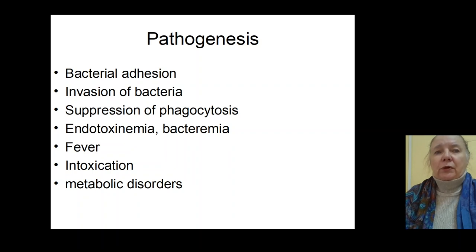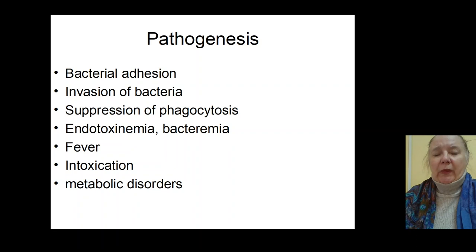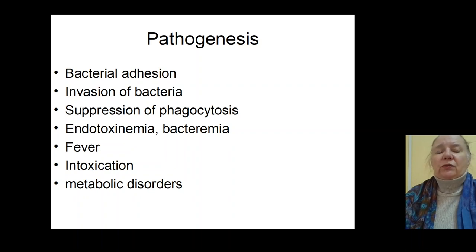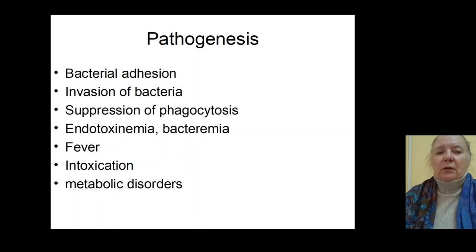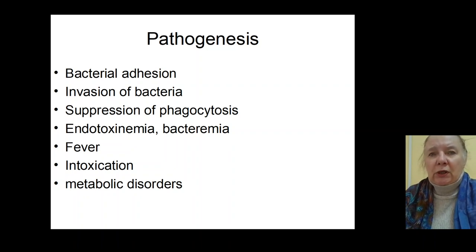Some bacteria have invasion abilities, aggressive abilities, and produce exotoxins which cause depression of phagocytosis and depression of immune response. This leads to fever and intoxication, disturbances of microcirculation, metabolic disorders, and polyorgan insufficiency. This is the pathogenesis of toxic shock in Salmonellosis.